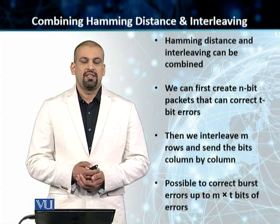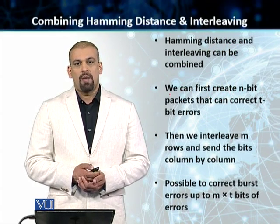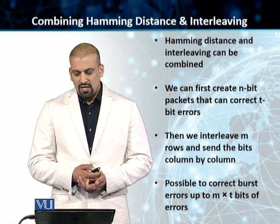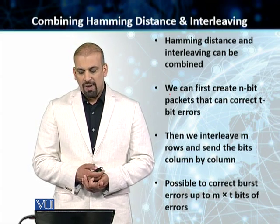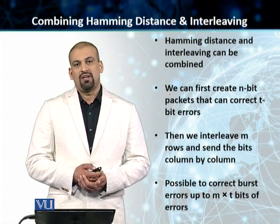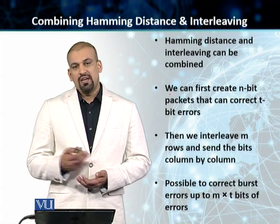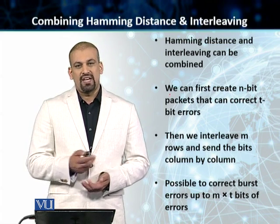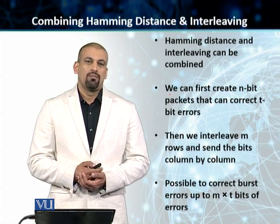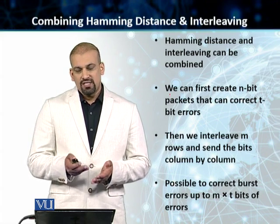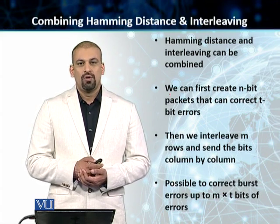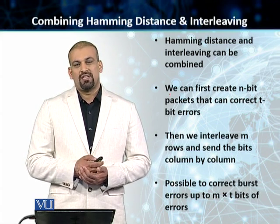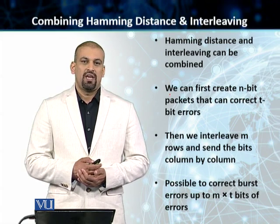We'll move on to our next technique: the combination of Hamming distance and interleaving. Using Hamming distance, we can first create an n-bit packet that can correct t-bit errors. Then, using interleaving, we can interleave m rows and send the bits column by column. Using both these techniques together, we have the capability of correcting m multiplied by t bits of a burst error efficiently.